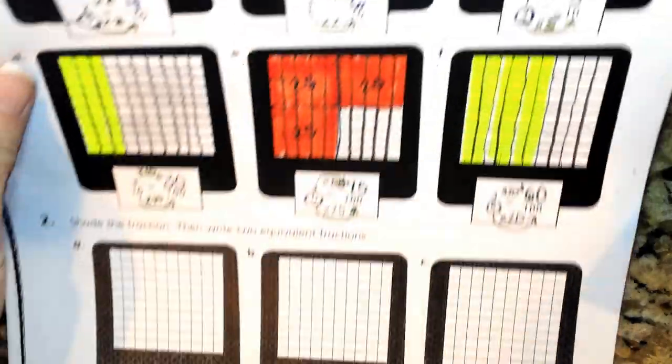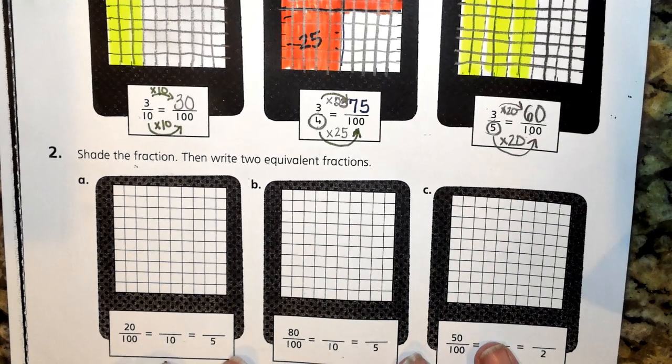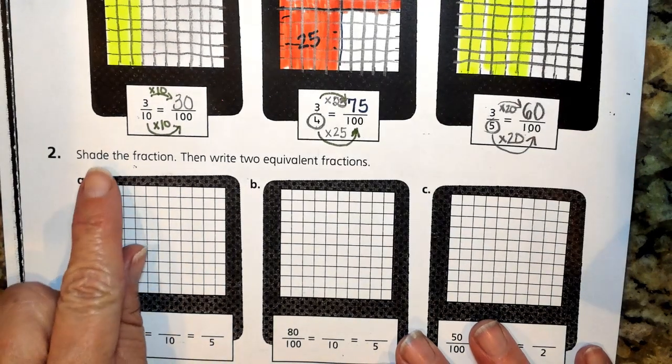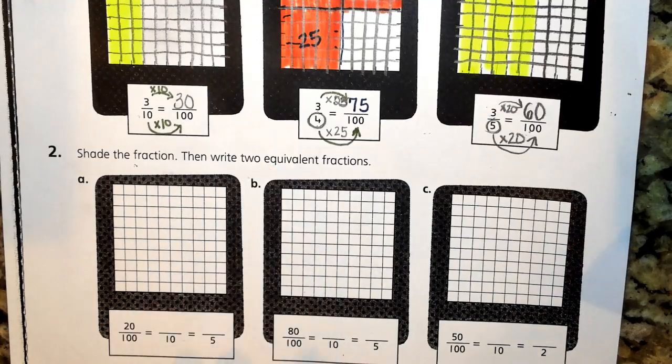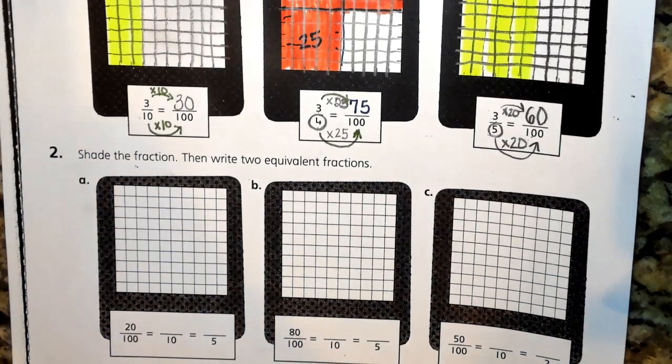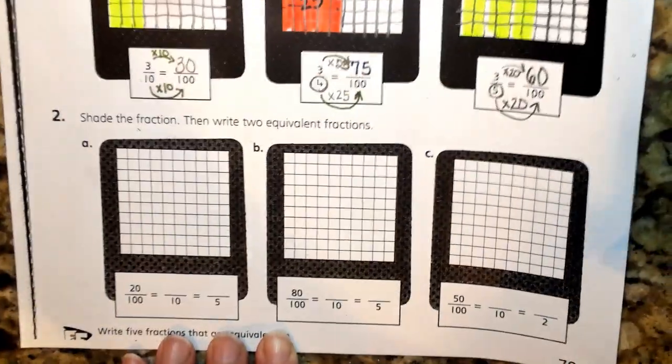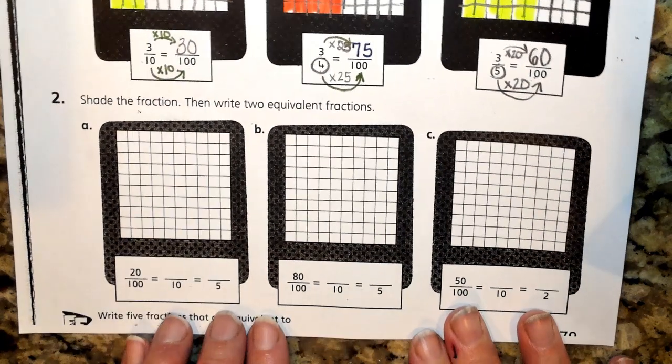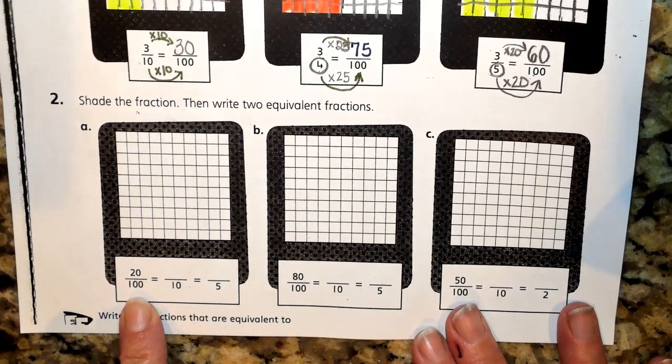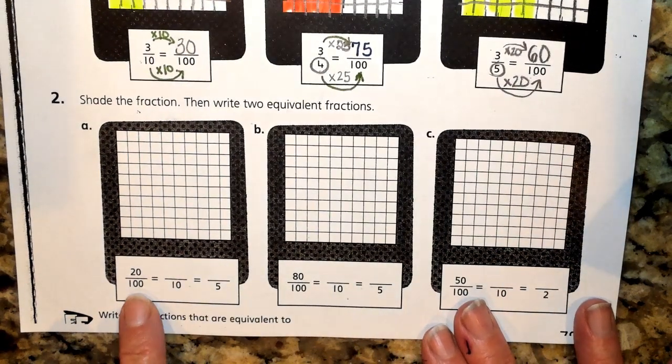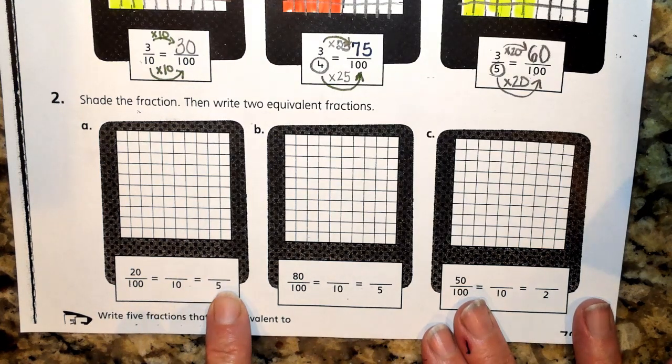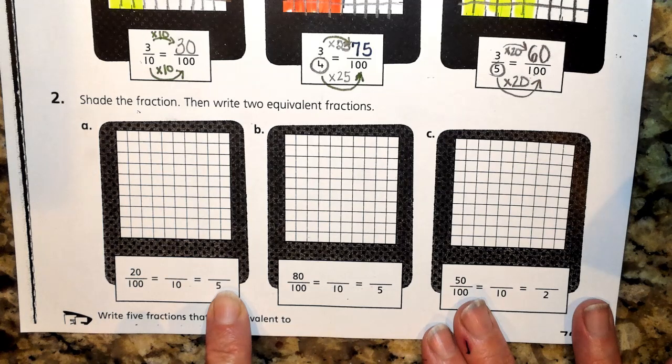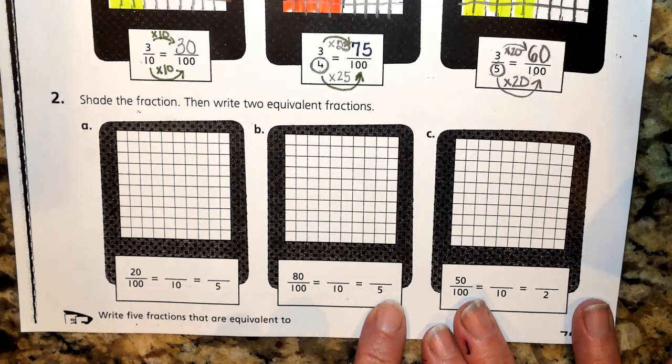So now we're going to be looking at the last row, number 2. We're going to be shading the fraction and then write 2 equivalents. As I scan and survey, I'm looking to see that I'm starting with a higher denominator and I notice that my denominator is getting smaller as I think about renaming this fraction.